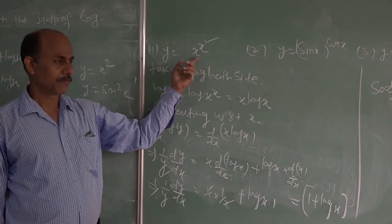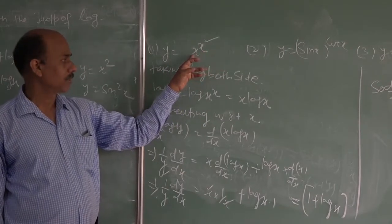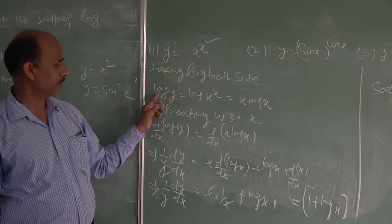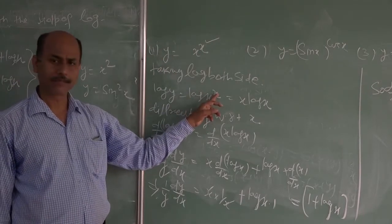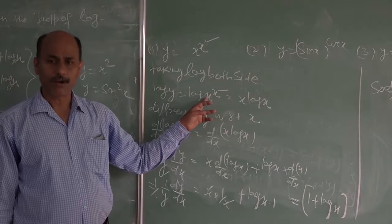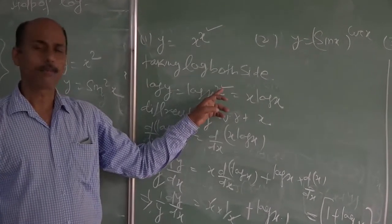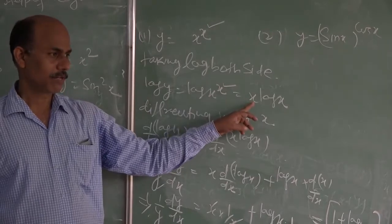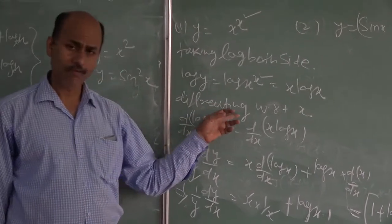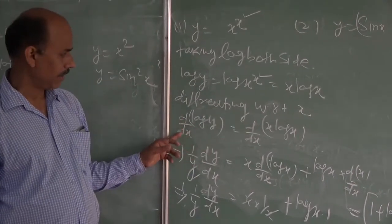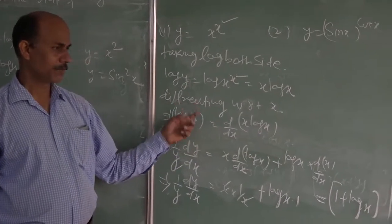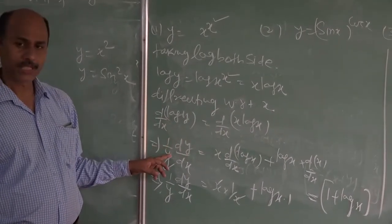So what you have to do to find the solution in this type of situation: first, you have to take log on both sides. When you take log both sides, write log y = log(x^x). Now log(x^x) matches the standard log rule log(m^n) = n·log m, so you can write it as x·log x. Now open the differentiation on both sides, writing d/dx of log y = d/dx of x·log x.